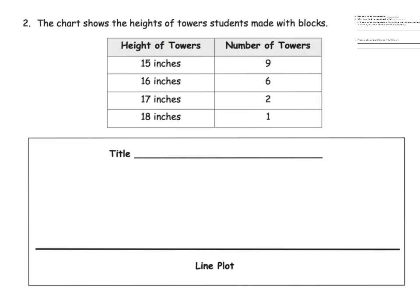The last one is just more of the same. We're going to take this data and make a line plot. We see that our height of towers, so let's just put tower height. We see that we go from 15 to 18, so I'm going to start down here at zero.